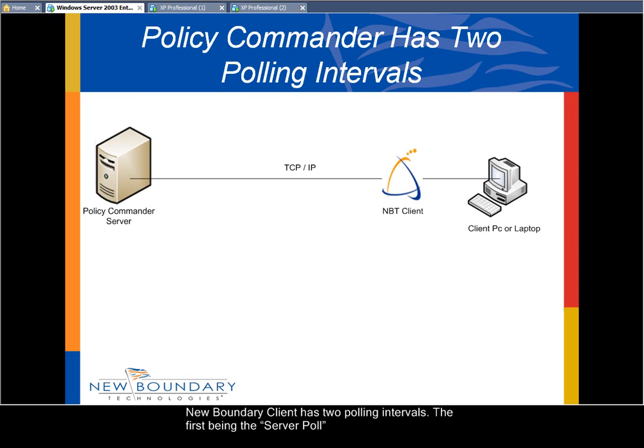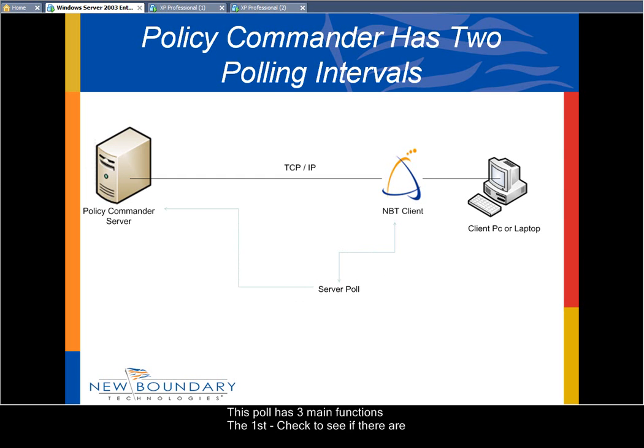Now, the New Boundary Client has two polling intervals. The first being the server poll. This poll has three main functions.